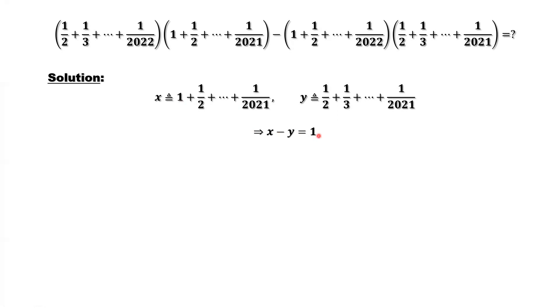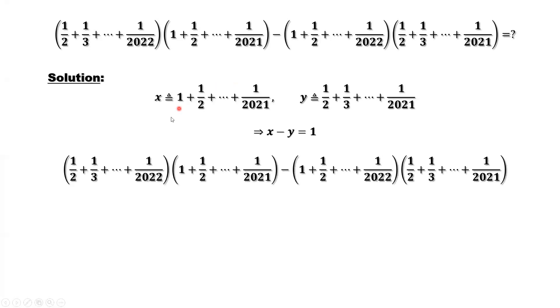We want to replace each part in terms of x or y. Look at the first part. Is this related to x or y? It is related to y. What's the difference? This part has one more term, the last term, 1 over 2022. So this is y plus 1 over 2022.